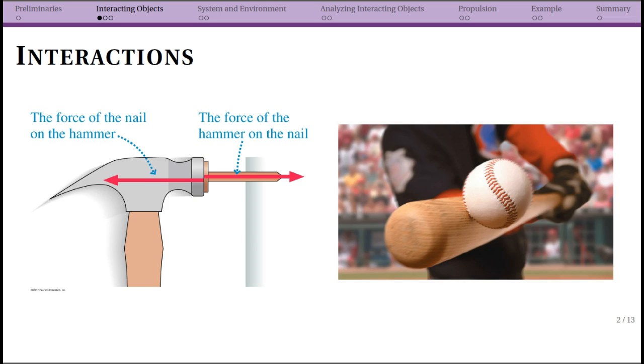So interactions. We mean something specific when we talk about interactions in physics class. And this is two objects that are normally in contact. Now, they don't have to be in contact, which we'll come back later. But for now, let's think about simple cases where things are in contact. So if we have a hammer hitting a nail, that drives the nail into the wood or whatever the nail is in.